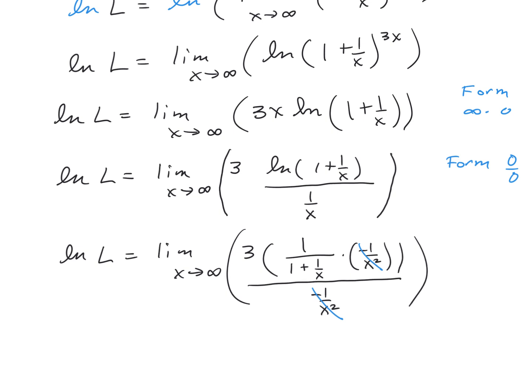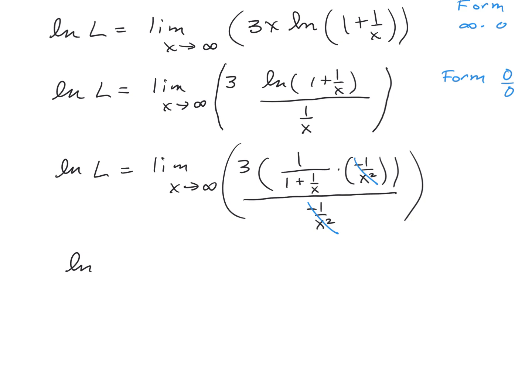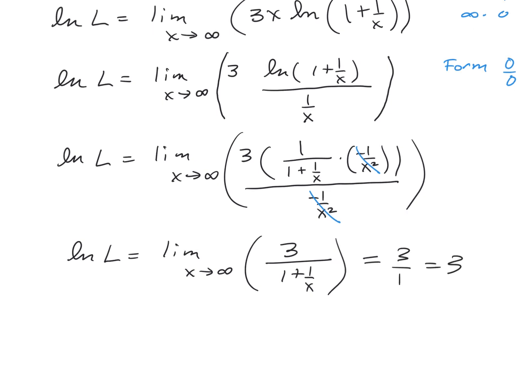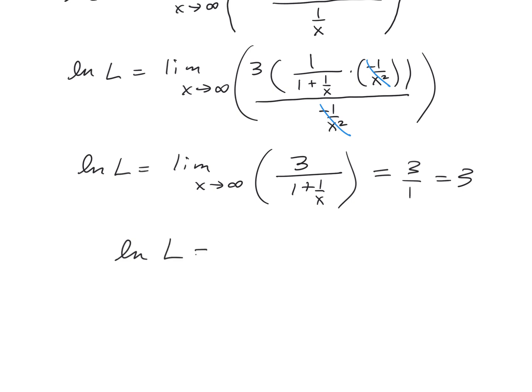What's left is: the natural log of L equals the limit as x goes to infinity of 3 divided by 1 plus 1 over x. Since x is going to infinity, 1 over x is going to 0, so this equals 3 over 1, which is just 3. So the natural log of L equals 3. To extract our limit, we apply inverse functions — so L equals e to the 3rd power.